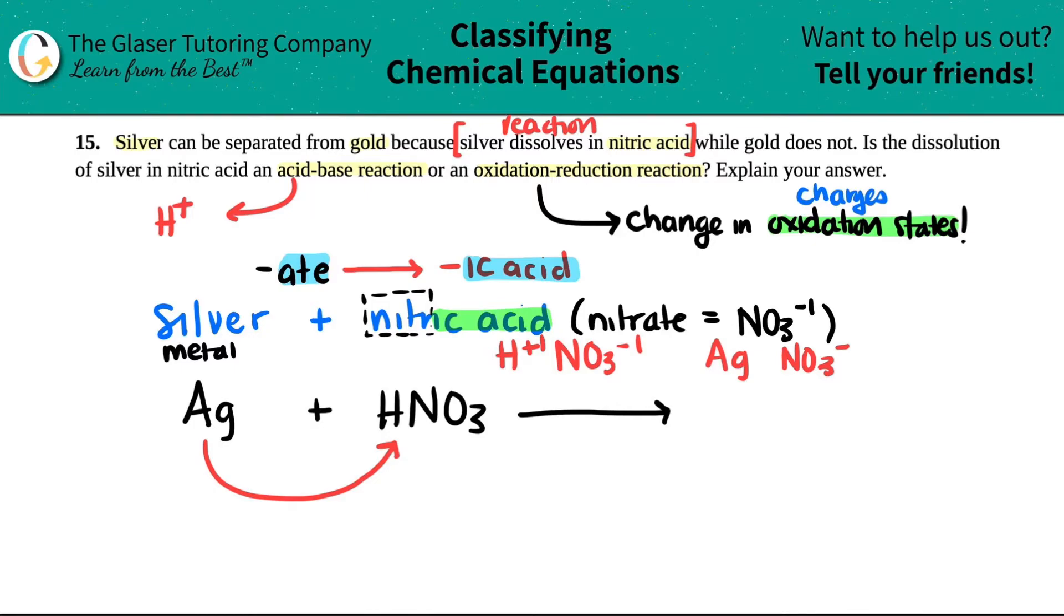Now also know that nitric acid is one of your strong acids. Strong acids always dissolve 100%. So they break down automatically. So this is going to be existing as its ions, H plus and NO3 minus. Just know that Ag always wants to have a plus one charge.